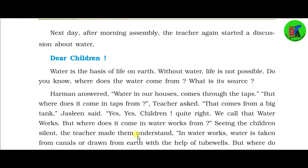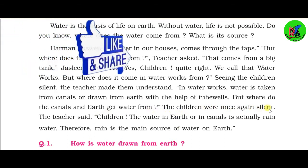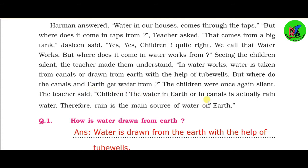Seeing the children silent, the teacher explained further. In water works, water is taken from canals or drawn from earth with the help of tube wells. The teacher then asked where canals and the earth get their water from. The children were silent again. The teacher said that water in canals and in the earth is actually rain water. Therefore, rain is the main source of water on earth.